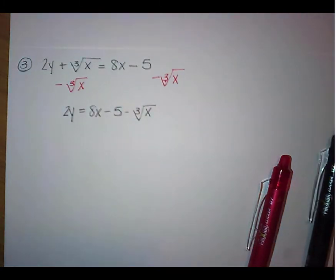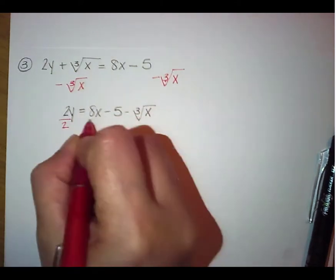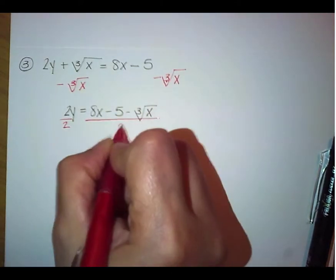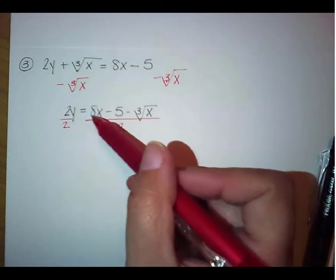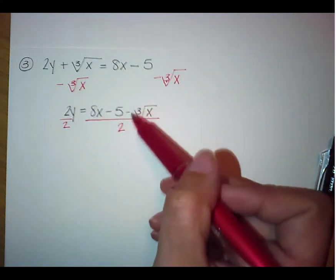The next thing we're going to do, again, is we're going to get rid of that number in front of that y. So we're going to divide by 2. We're going to divide this side by 2. Again, I'm looking at all 3 numbers, the 8, the 5, and the 1 that is sitting in front of here.